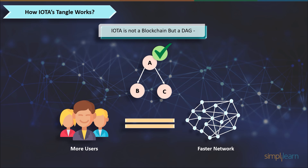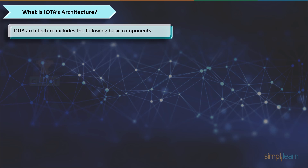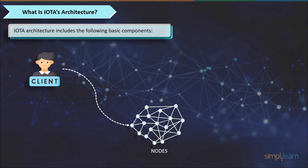But what is IOTA's architecture for those transactions to take place? IOTA's architecture includes the following basic components. Client: users who send transactions to nodes on the IOTA network, such as wallets, applications, and more, can join the Tangle. Nodes: devices that are connected and in charge of maintaining the Tangle's integrity — IOTA is a network made up of these devices. Tangle: the Tangle stores all of its data in objects referred to as transactions, and a transaction becomes immutable and unchangeable once it is linked to the Tangle.